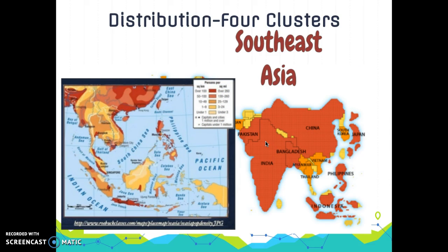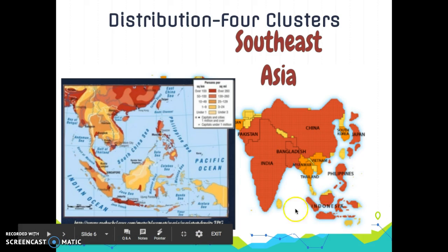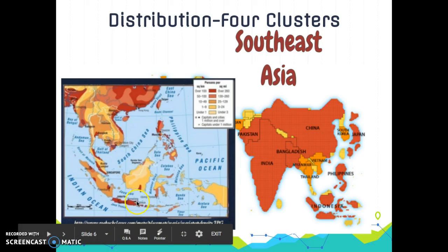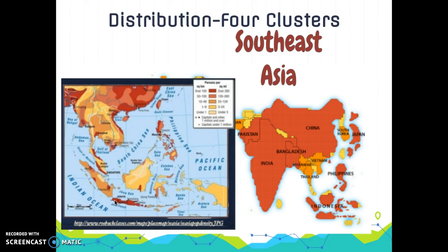The last cluster is Southeast Asia. Indonesia is the major player — the world's fourth most populous country, made up of 13,677 islands — though the majority of the population lives near Jakarta. The Philippines is also significant. Just like South Asia and East Asia, the majority of people in this region are farmers.